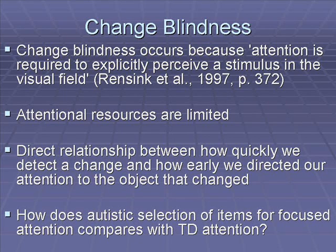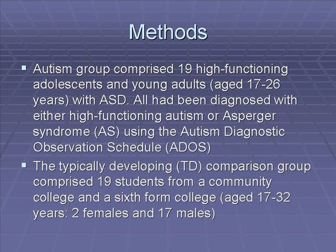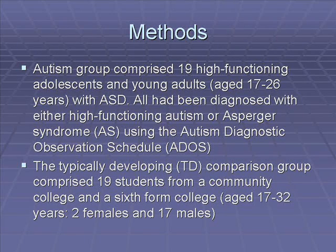The researchers in this study wanted to know how autistic selection of items for focused attention compares with typically developing attention. The autistic group comprised 19 high-functioning adolescents and young adults aged 17 to 26 years with autism, all diagnosed with either high-functioning autism or Asperger's syndrome. The typically developing comparison group comprised 19 students from a community college and a sixth form college, aged 17 to 32 years.